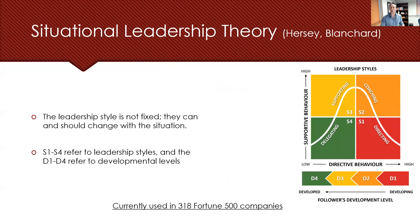The next theory is situational leadership theory. In this, the leadership style is also not fixed, as leaders can change and adjust depending upon the situation. Looking at the figure on the right-hand side of the page, you can see four quadrants from S1 to S4, as well as D1 through D4. This leadership theory is currently used in 318 out of all the Fortune 500 companies.